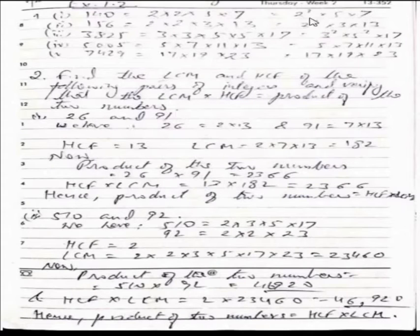140 is 2 to the power 2, 5 and 7. 156 is 2 to the power 2, 3 and 13. 3825 is 3 into 3 into 5 into 5 into 17. 5005 is 5 into 7 into 11 into 13. 7429 is 17 into 19 into 23. The first problem is solved.